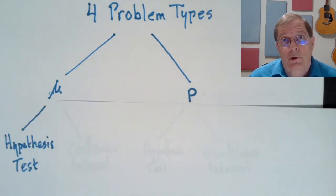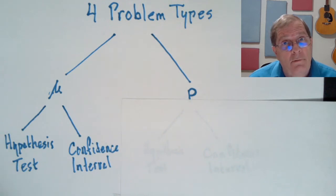In each of these cases, we're going to look at two different kinds of processes for saying something meaningful about that parameter. One is a hypothesis test. The other is a confidence interval.